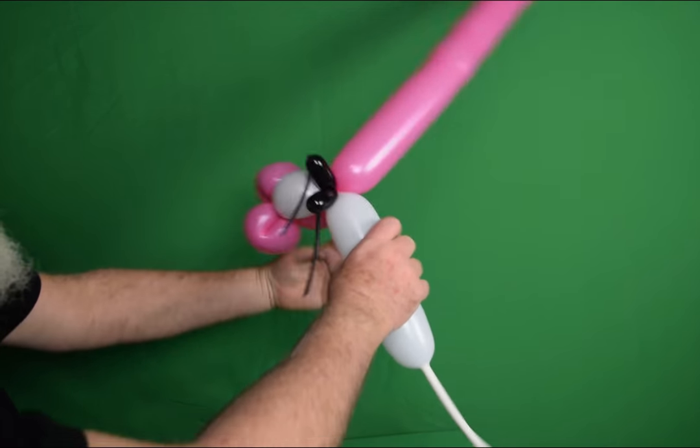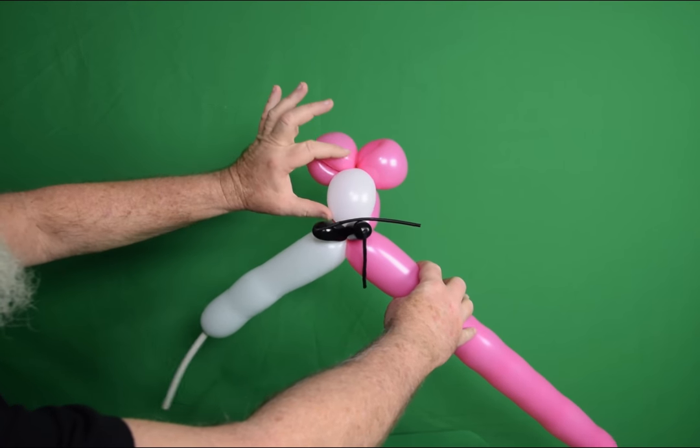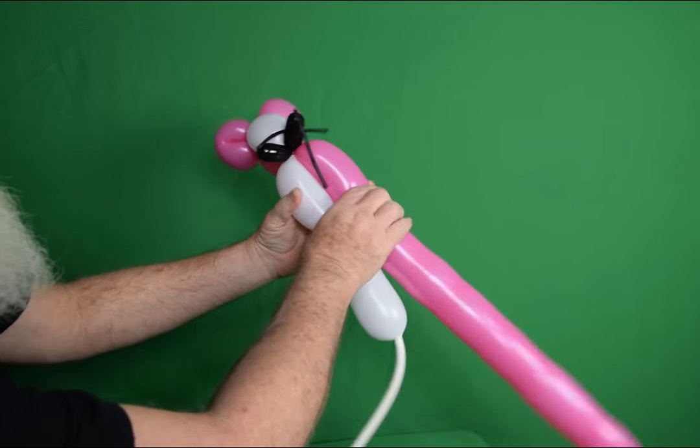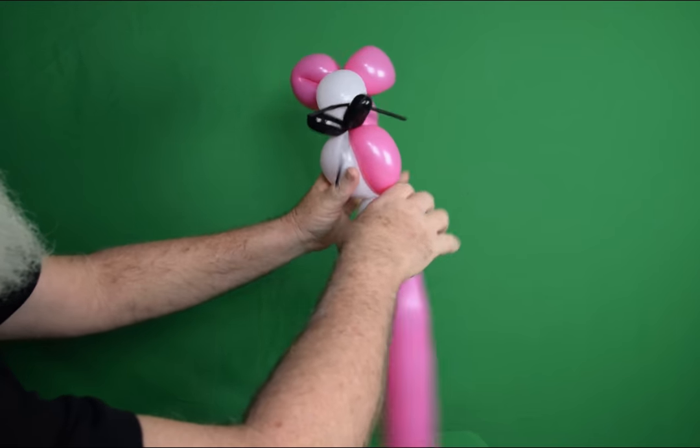We'll come back to them in a minute. Now you're going to take, keep working them soft. You need two more bubbles the same size as these two here. So just twist these two together to get two more, about four finger bubbles.